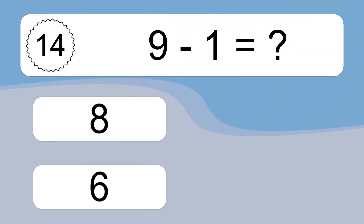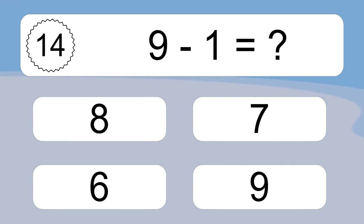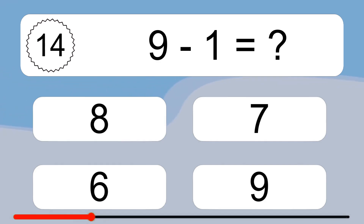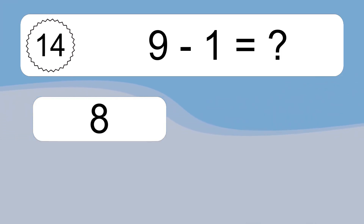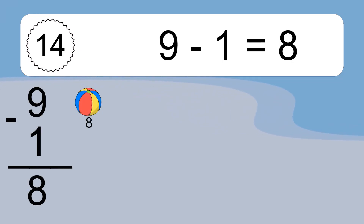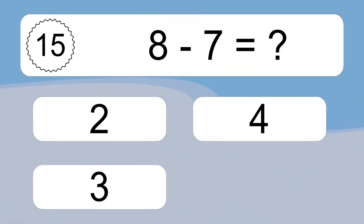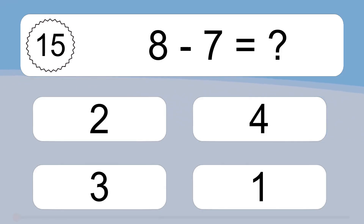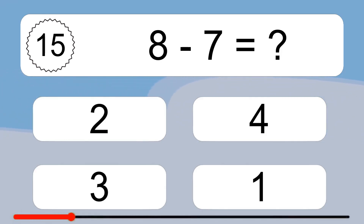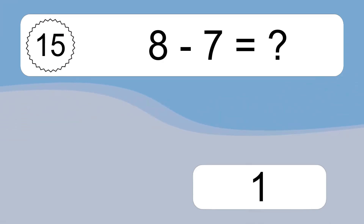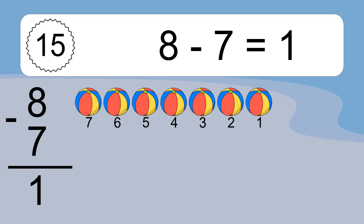9 minus 1 equals what? 9 minus 1 equals 8. Let's count it. 8. 8 minus 7 equals what? 8 minus 7 equals 1. Let's count it. 7, 6, 5, 4, 3, 2, 1.